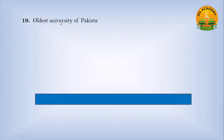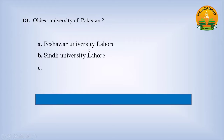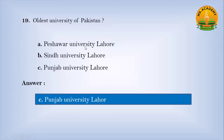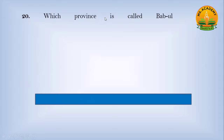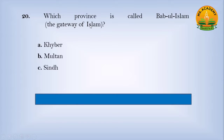Oldest university of Pakistan: option A Peshawar University, option B Sindh University, option C Punjab University Lahore — answer is C, Punjab University Lahore. Which province is called Babul Islam, the gateway of Islam? Option A Khyber, option B Multan, option C Sindh — answer is C, Sindh.